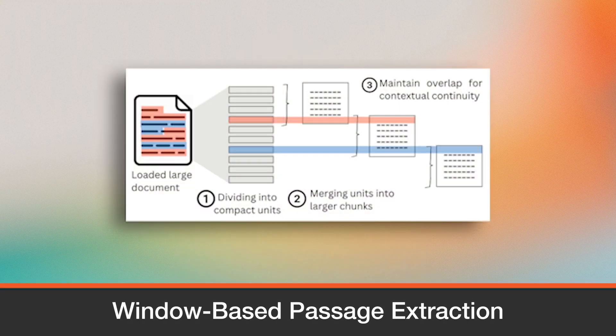Window-based passage extraction is used when no semantic structure is available. It divides text into fixed-sized windows based on sentence or paragraph count, or token length. These windows slide over the text, optionally with overlap, grouping content into consistent, retrievable units.